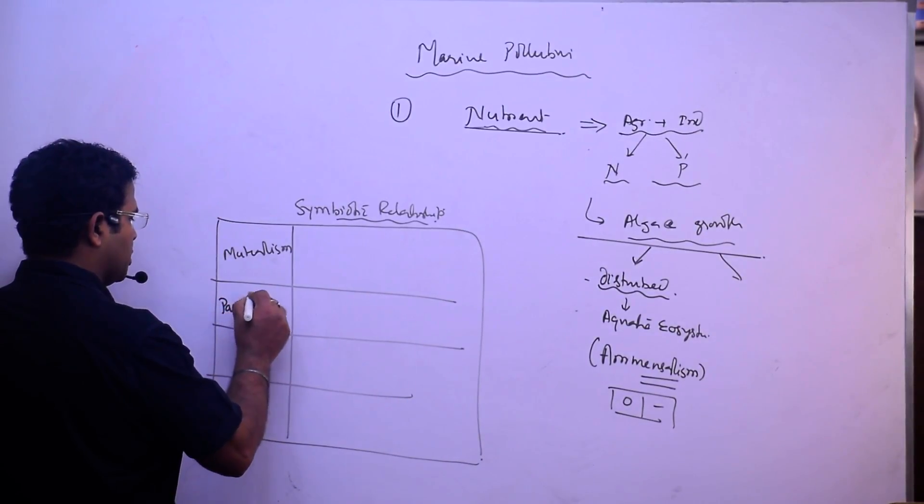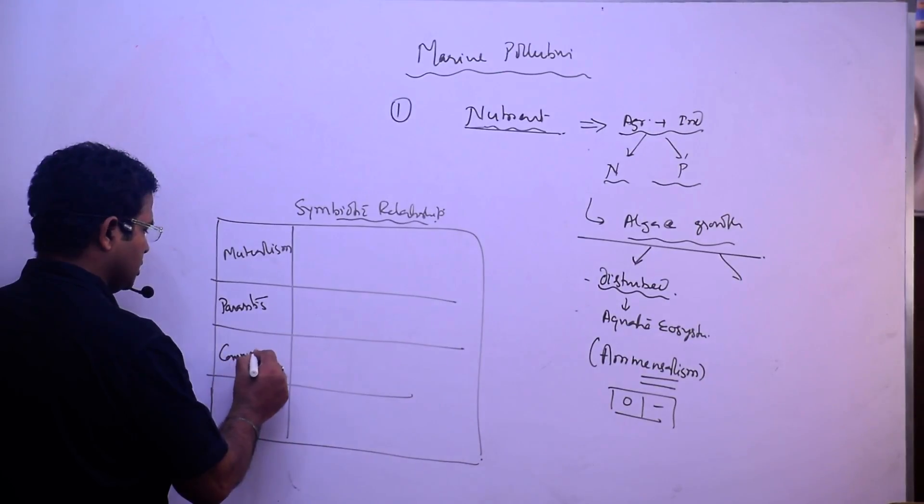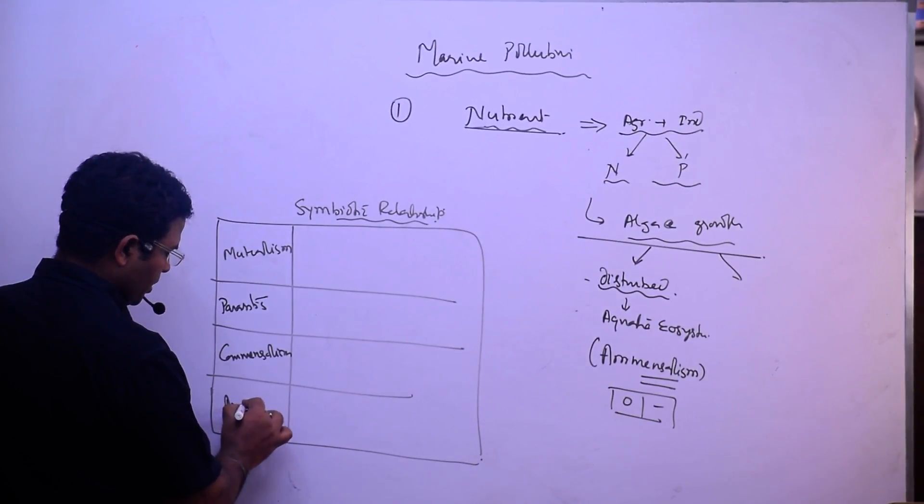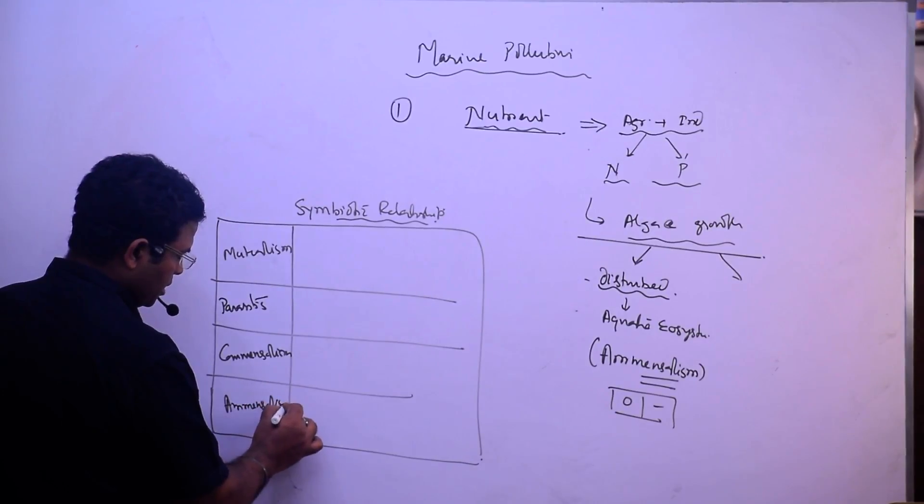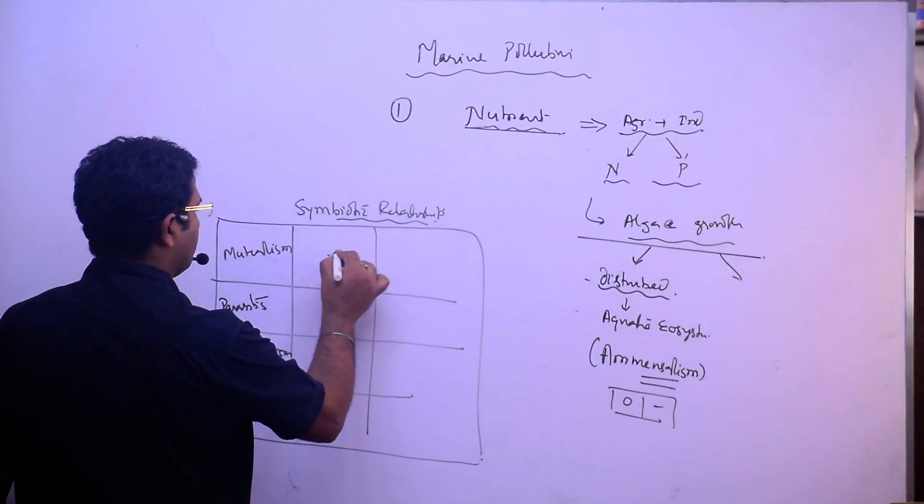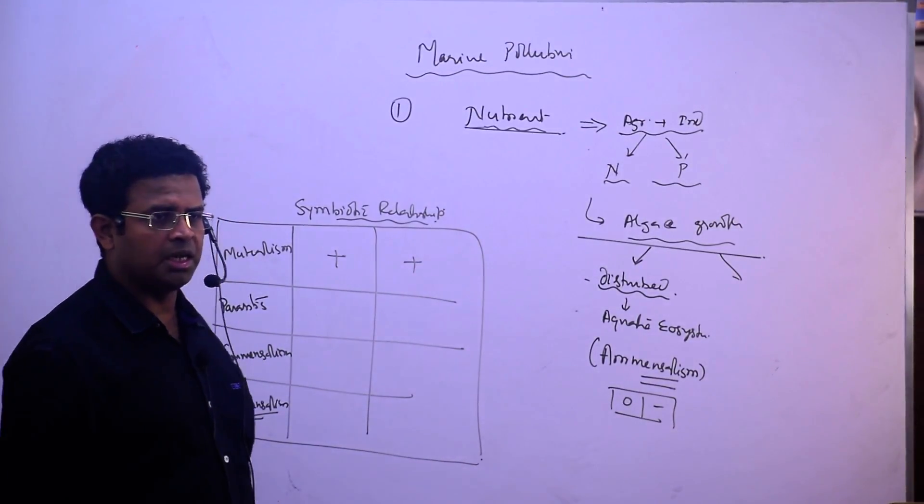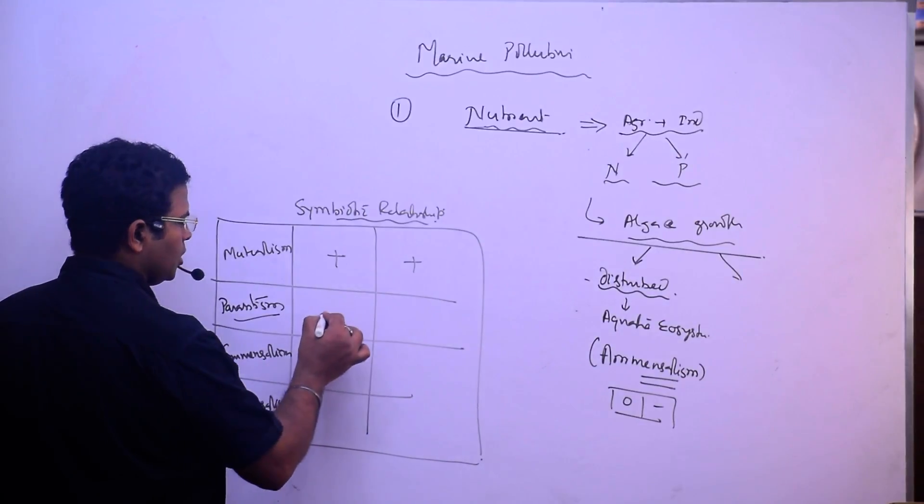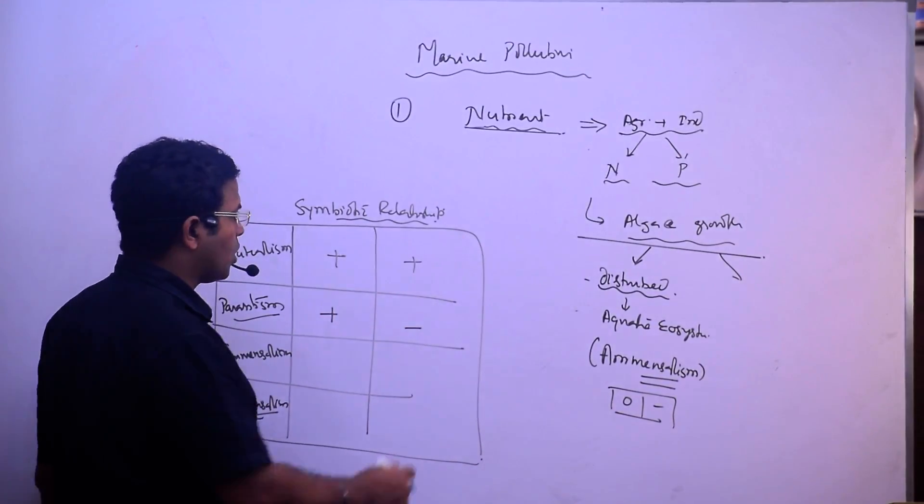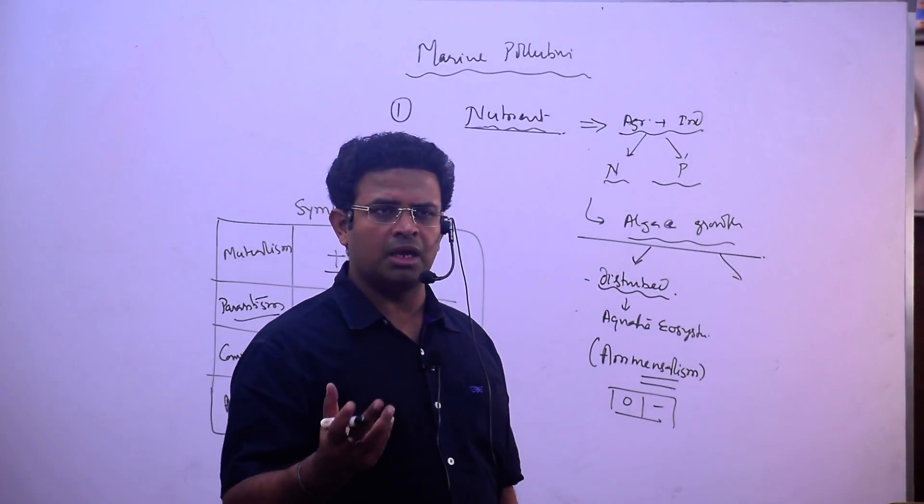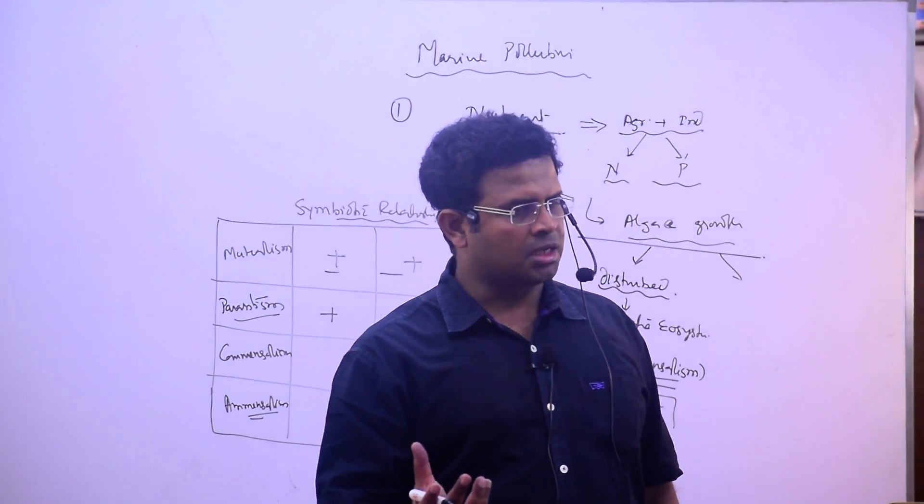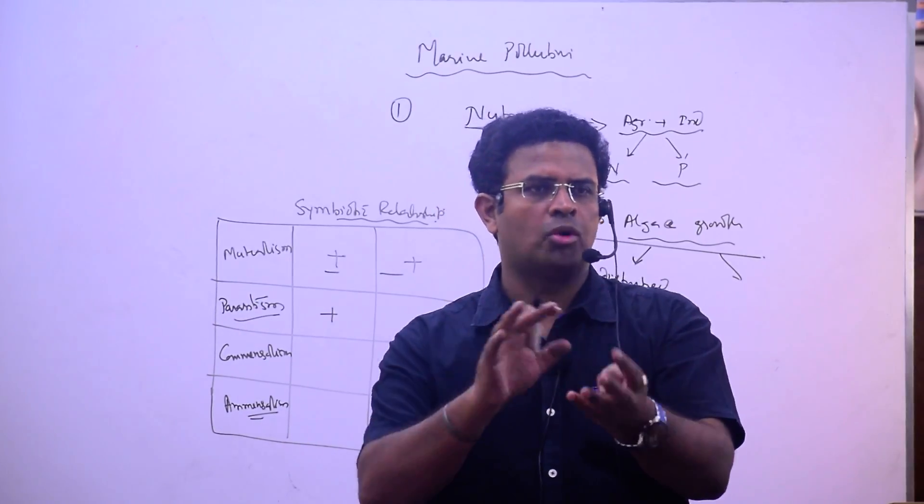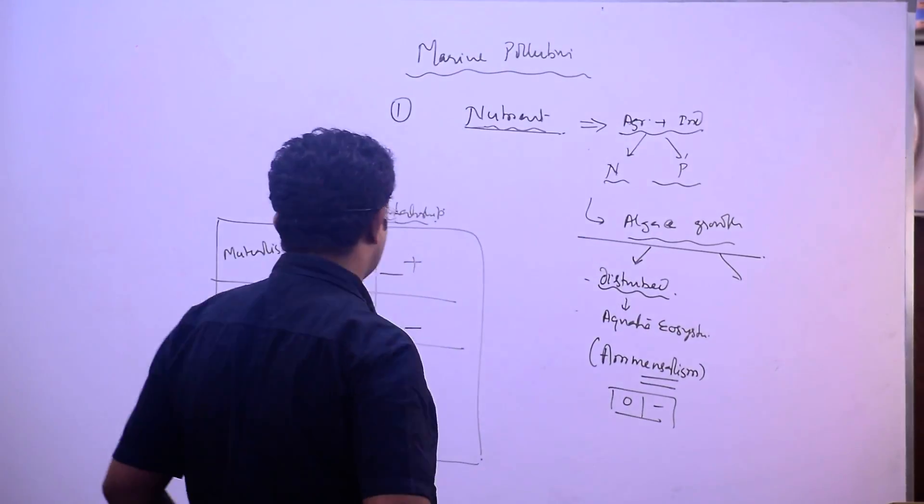Mutualism, parasitism, commensalism. Both are getting benefit in mutualism. And then parasitism, one is getting benefit, another is harmed. Corals - corals and algae. Algae makes food for it by photosynthesis and corals provide shelter. I am on top of you. So both are benefiting each other.